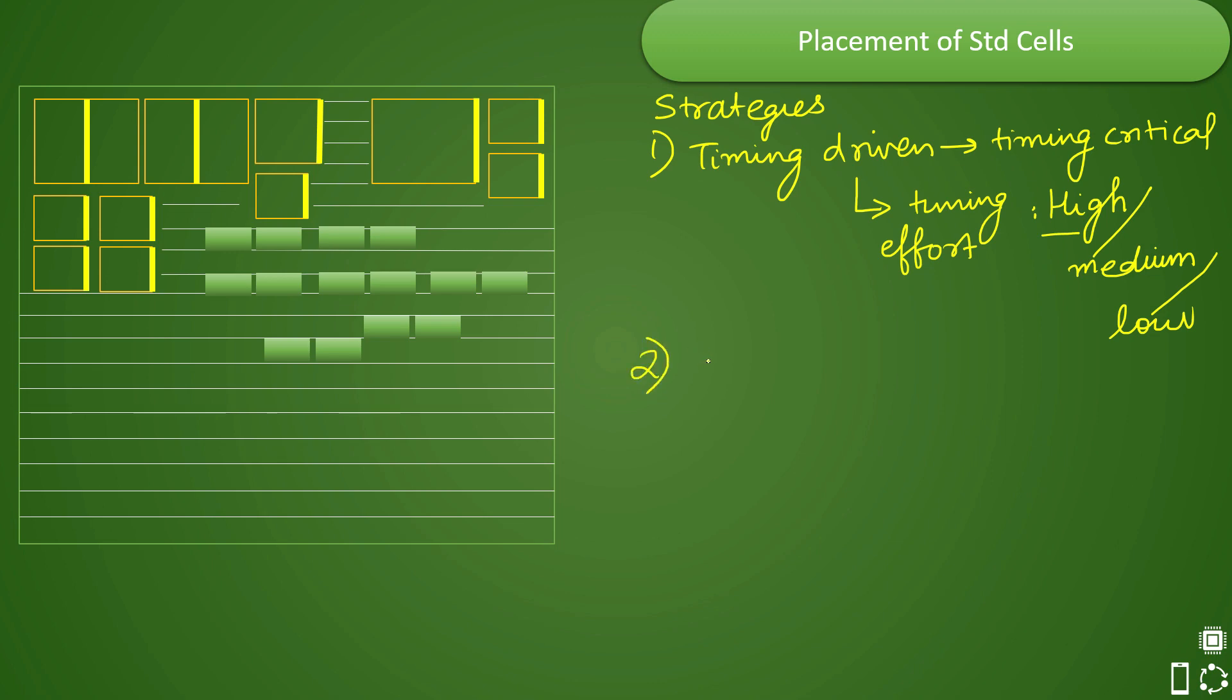Second option that is available as a strategy is congestion driven. So while placing the standard cells, you are essentially telling the tool to place the standard cells such that your congestion should be minimum. You are trying to minimize the congestion.